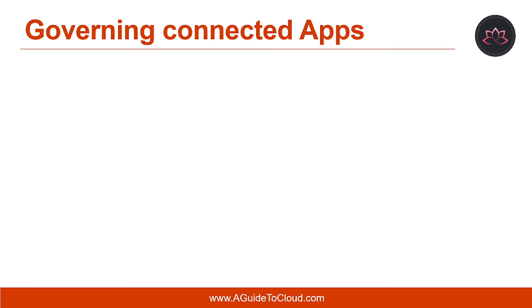Governance enables you to control what your users do in real time across apps. For connected apps, you can apply governance actions to files or activities. Governance actions are integrated actions you can run on files or activities directly from Microsoft Cloud App Security. The first governance action type is Notification. This includes alerts, email notifications for users, notifying specific users, and notifying file editors as well. These alerts can be triggered in the system and propagated via email and text messages based on a severity level.